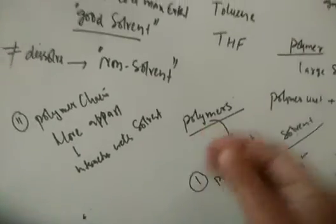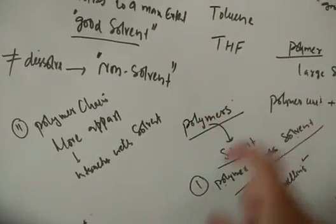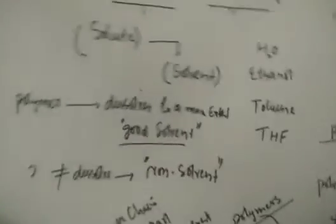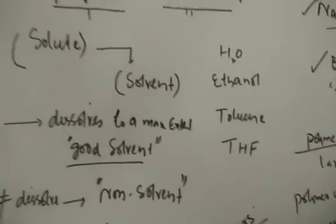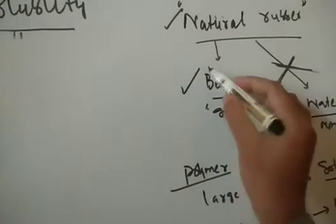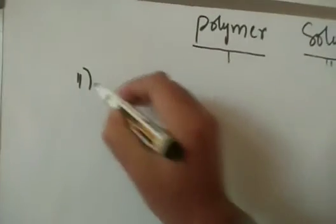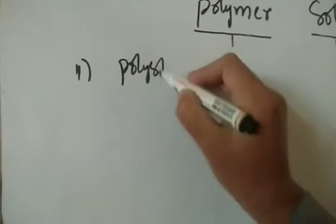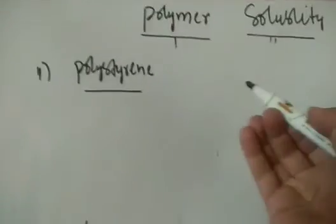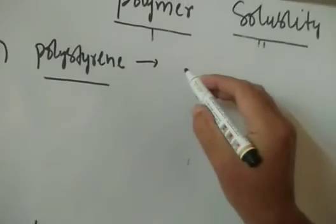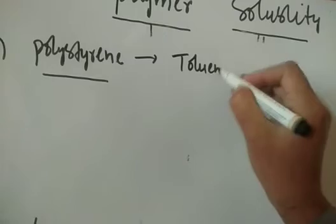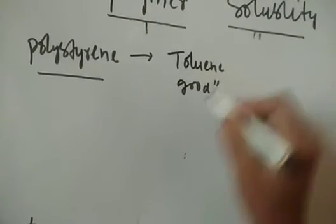The thermodynamic parameters which affect polymer solubility, and the properties which vary with polymer solubility, we will see in the next class. Now let us highlight one more example. Consider polystyrene — also called styrofoam. For polystyrene, toluene acts as a good solvent — meaning it dissolves well in toluene.